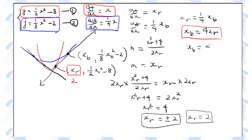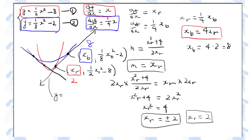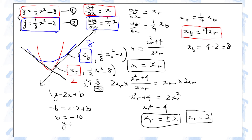The slope of the tangent line equals x sub r, so the line is y equals 2x plus b. Substituting x equals 2 into the red parabola equation gives y equals minus 6. Therefore b must be minus 10, and the equation of the tangent line is y equals 2x minus 10. This is the answer.